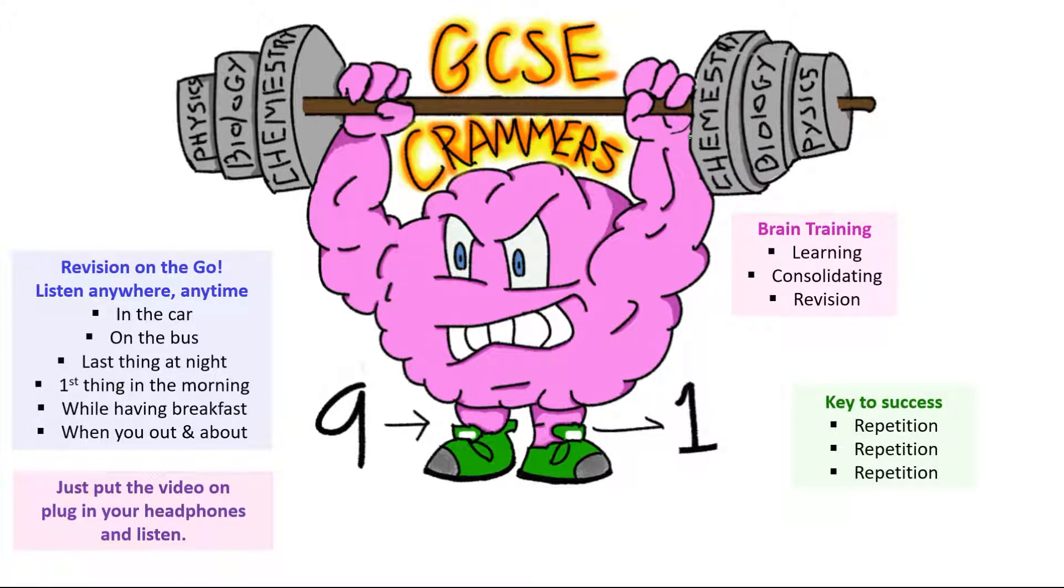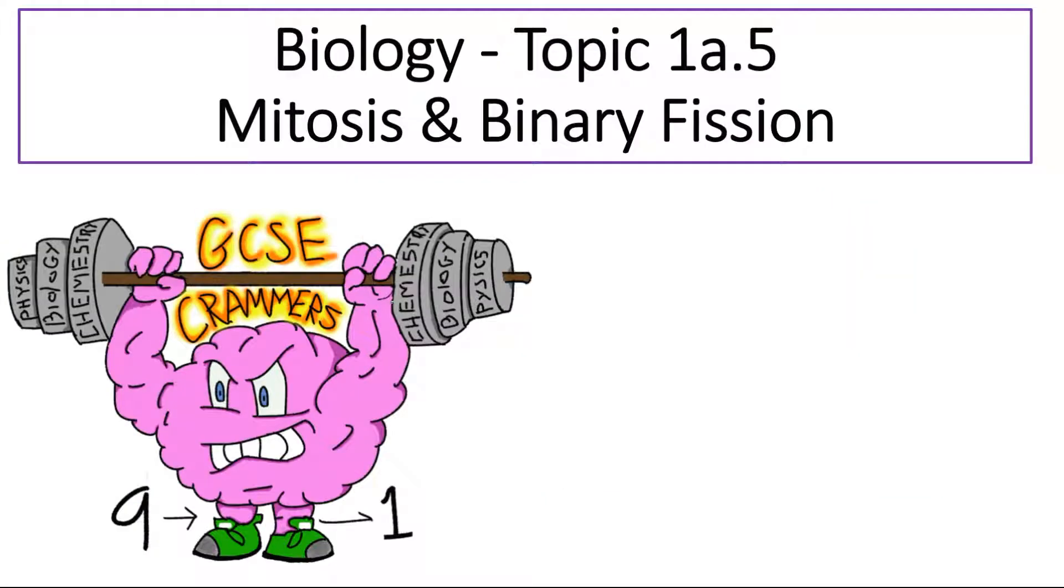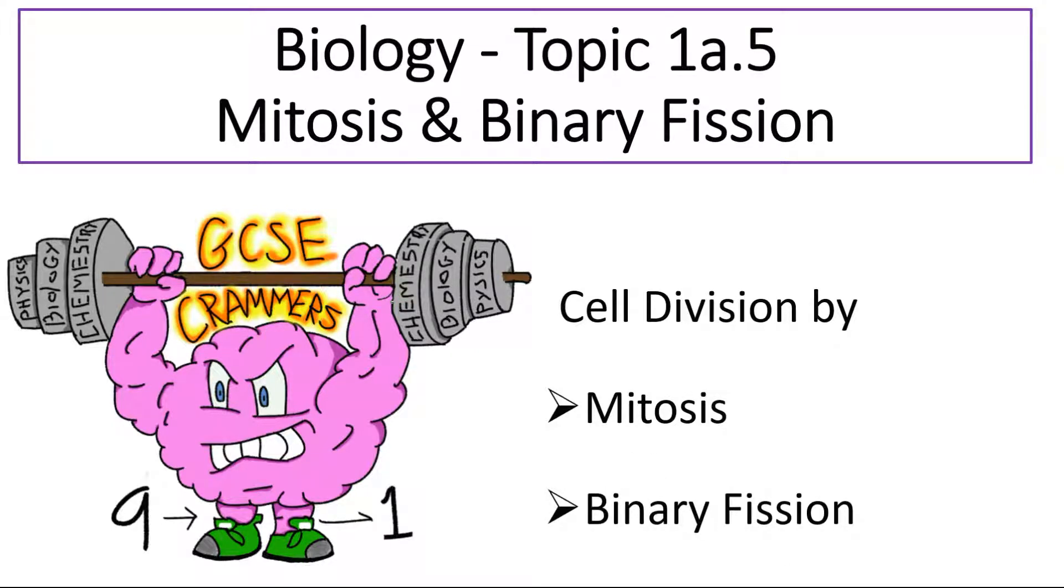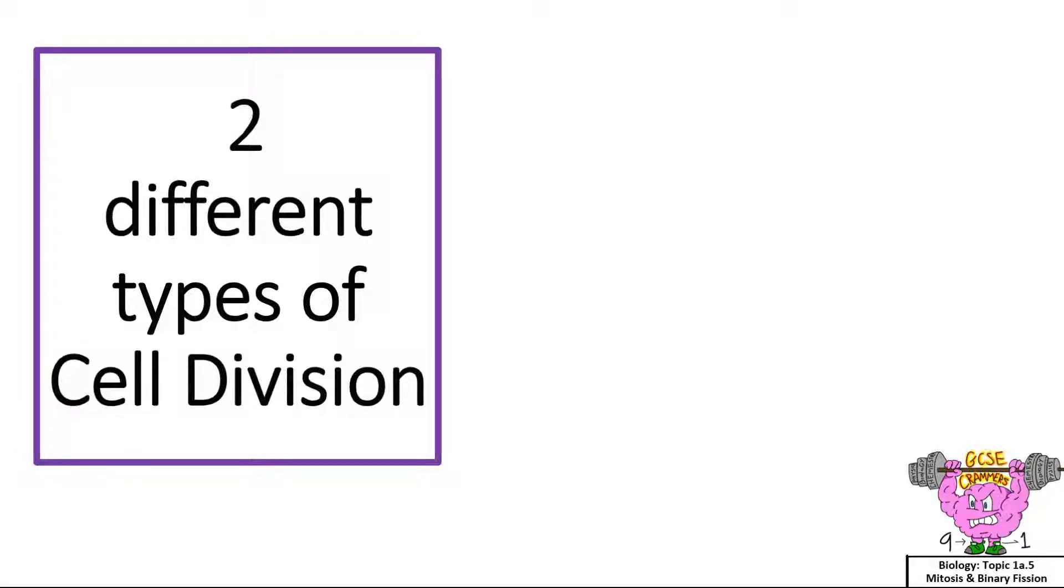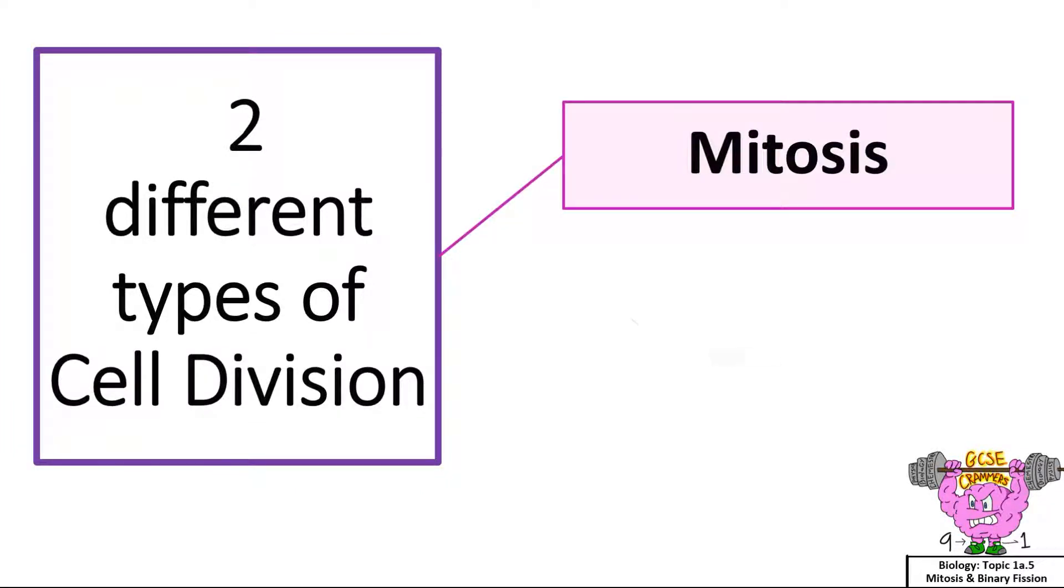Run through the questions as many times as you need, until the answers pop into your head. Today we're revising Biology Topic 1A.5, Mitosis and Binary Fission, covering cell division by mitosis in eukaryotic cells and binary fission in prokaryotic cells.